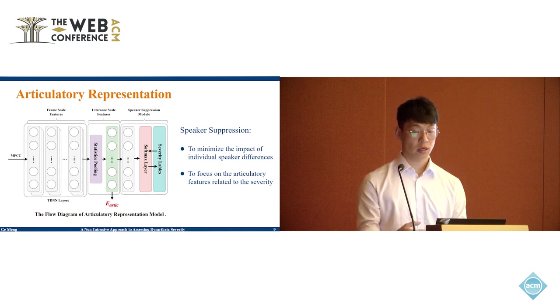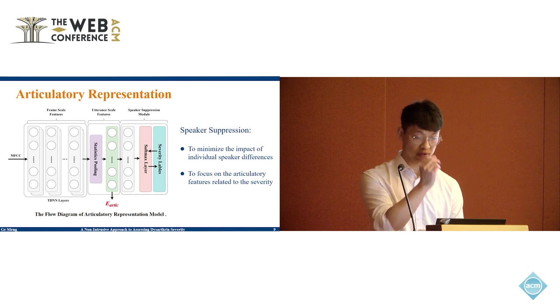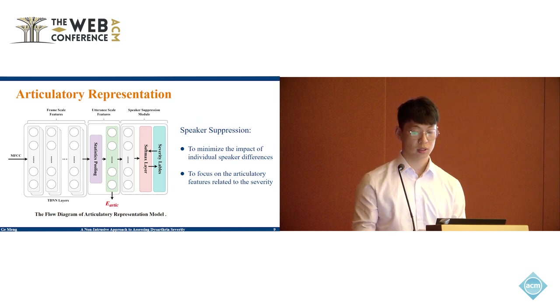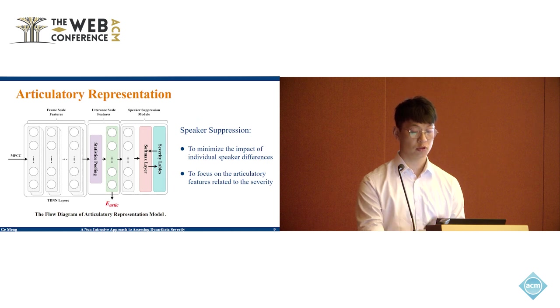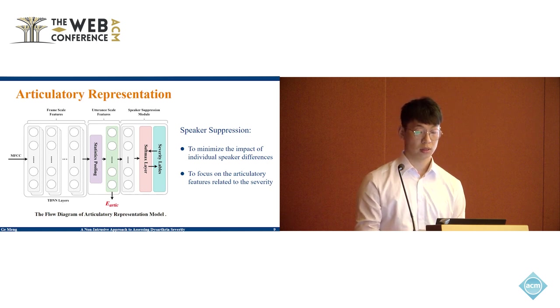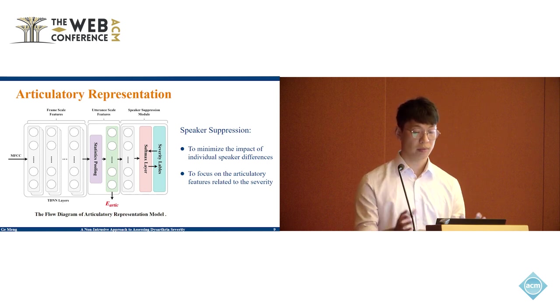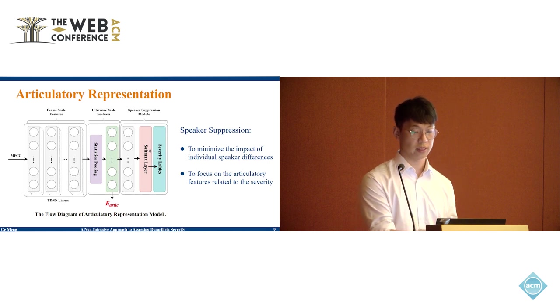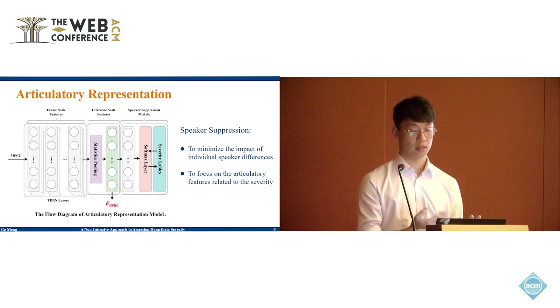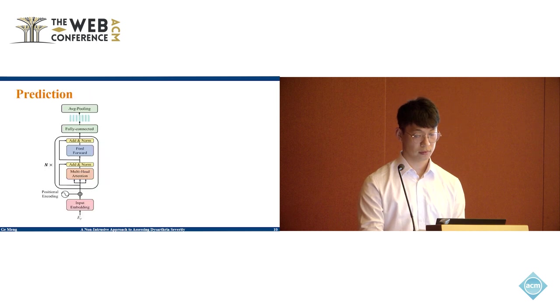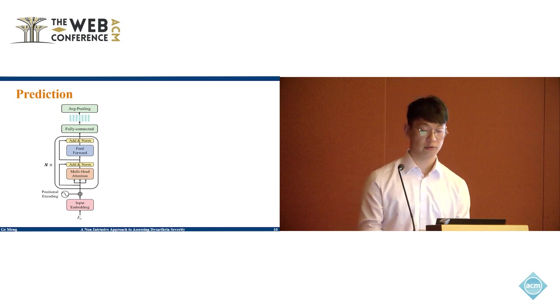The articulatory part captures the global information of speech, such as respiration, hoarseness, and clarity. However, it also includes speaker-specific information, so we've developed the speaker suppression module. During the training phase, the module splits all speakers in the dataset into three classes based on their severity level. This approach helps minimize the influence of individual speaker differences and pays more attention to hoarseness and other features directly related to the severity level.